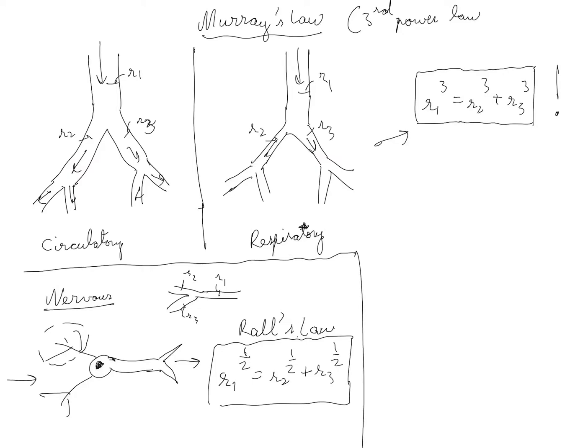So another place where you see this power law is what's called Leonardo da Vinci's rule or Leonardo da Vinci's law which deals with the bifurcation patterns in trees. So you have a branch of a tree which bifurcates into smaller branches and so on and so forth. Now you can ask what's the relationship between the radius of the branches and it turns out to be r1 squared is equal to r2 squared plus r3 squared. So you don't have the exponent three here you have an exponent of two.